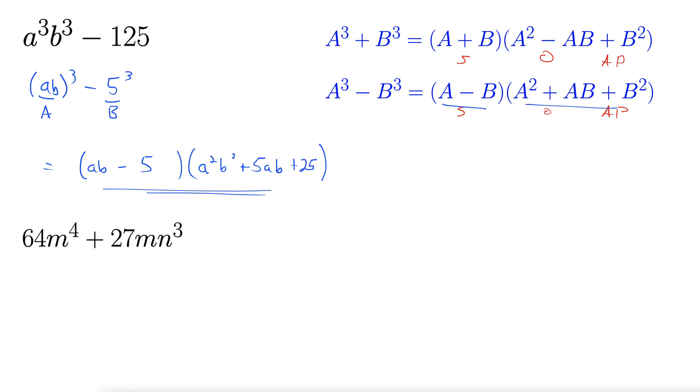Here we have 64m⁴ + 27mn³. I can see we're heading towards a formula here, but we need to remember to factor out the greatest common factor first.